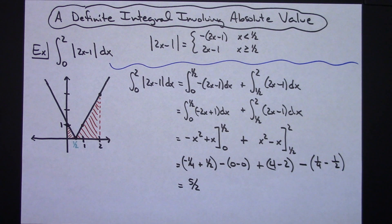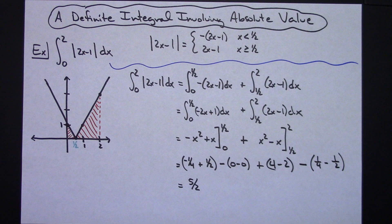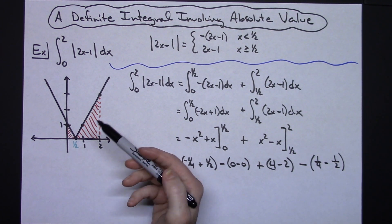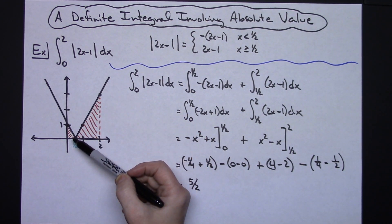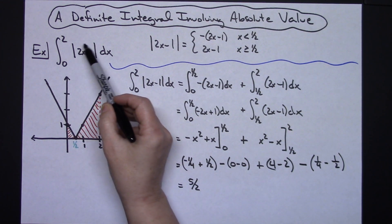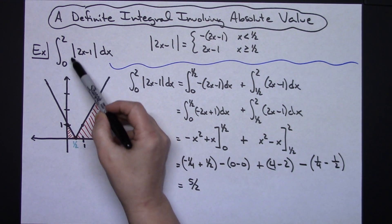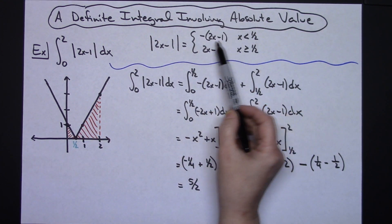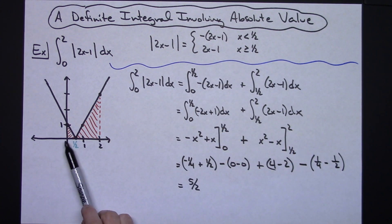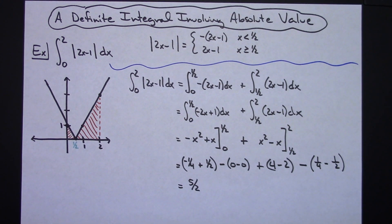Just one real quick example of a definite integral that involves an absolute value and in this particular case it really helped to take a look at that graph, see what you had, and then rewrite that integrand into a piecewise function so you could do the two individual sections and calculate that area under the curve. Thanks for watching and be sure to share with your friends. Thanks!